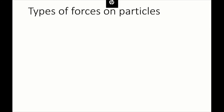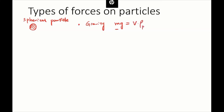When we talk about single particle dynamics, it's mainly doing force balance or force analysis on particles — and from now on, all particles are going to be spherical. We have to first know what types of forces act on these particles. One example force is gravity. Gravity is just mg: mass multiplied by acceleration. The mass is calculated by volume multiplied by particle density, and the volume is (π/6) d_p³, giving gravity = (π/6) d_p³ ρ_p g.